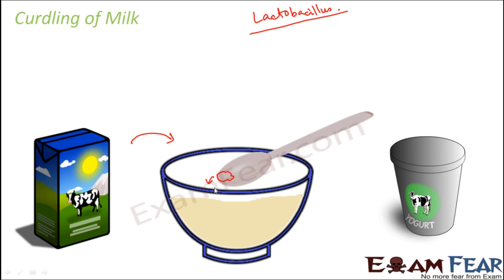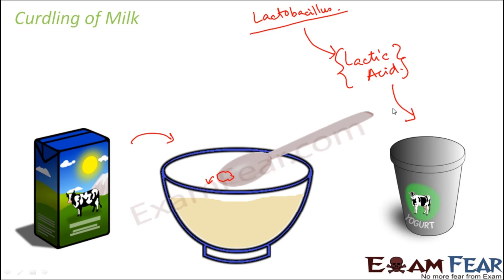As a result of this coagulation, lactic acid is also produced by the action of Lactobacillus bacteria. Since acids are sour in taste, curd is sour even though it is prepared from milk. During curdling, new chemical substances are formed like lactic acid, the protein structure changes, so curdling of milk is a chemical change.